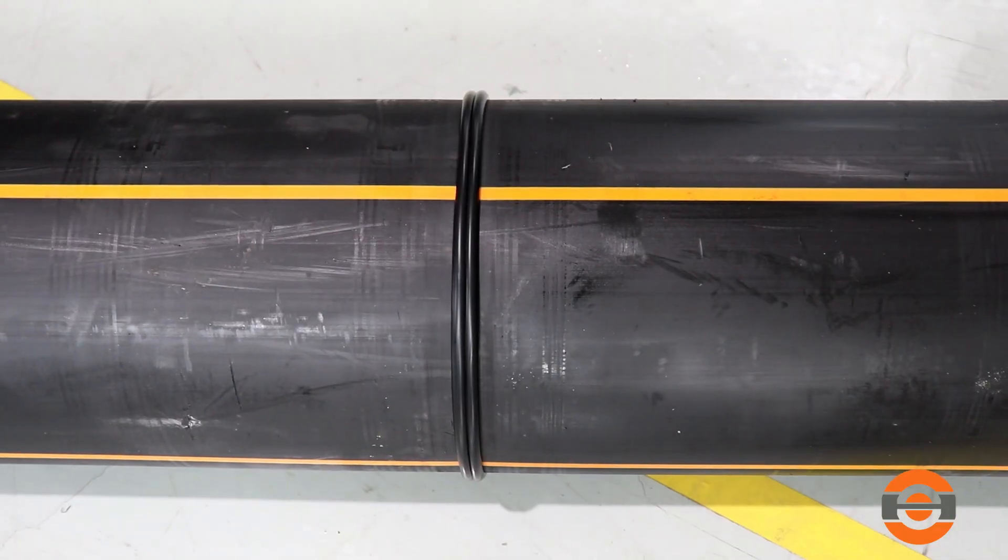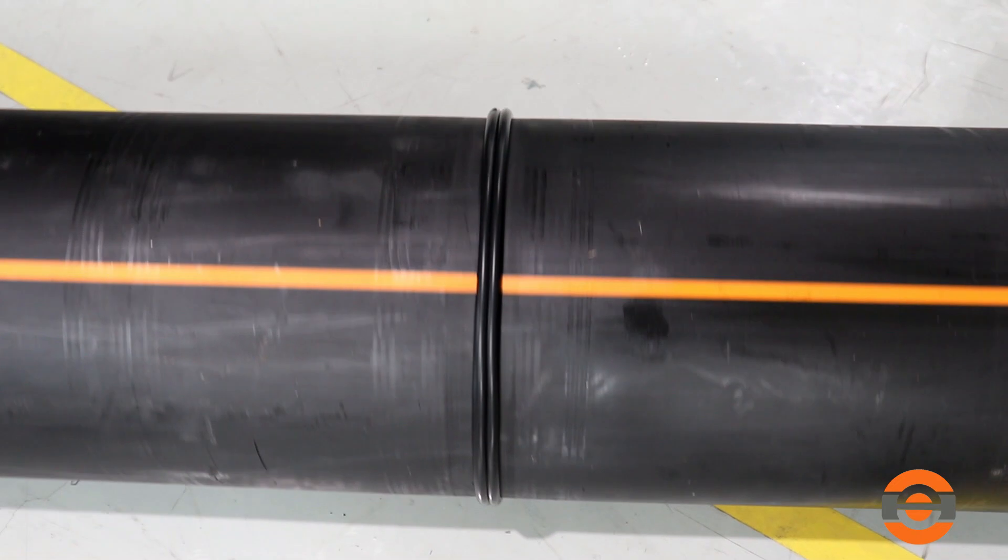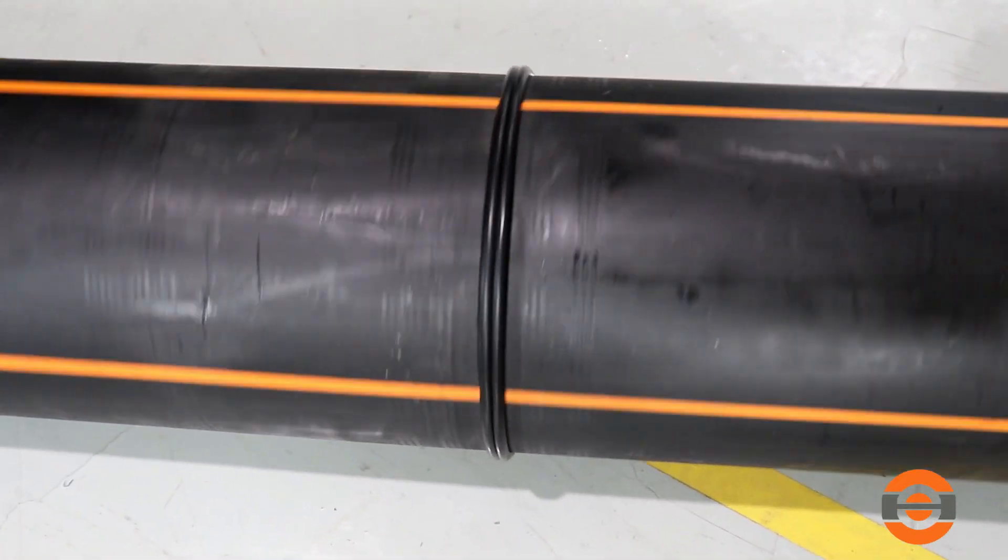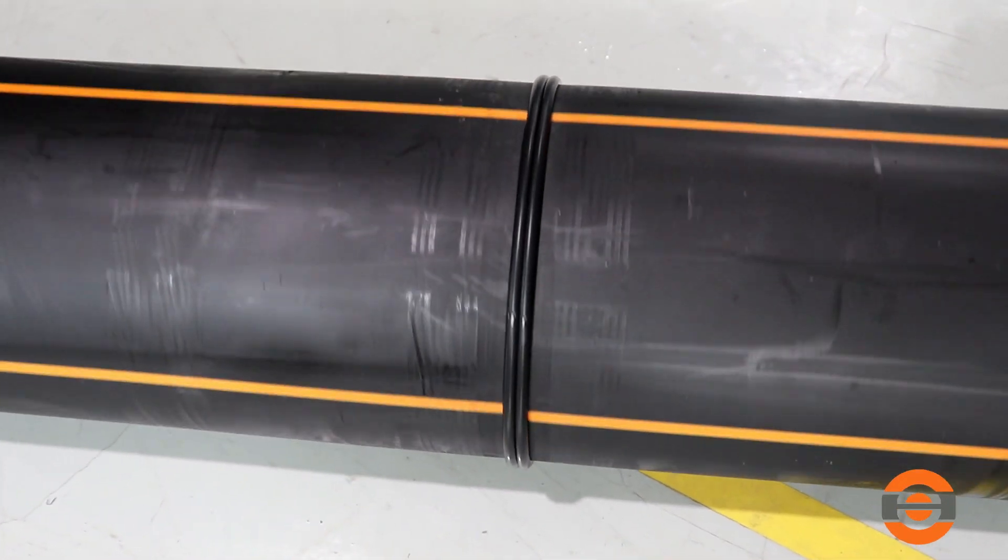Inspect both sides. The double bead should be rolled over to the surface and be uniformly rounded and consistent in size all around the joint.